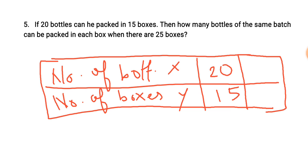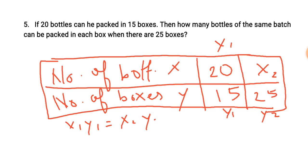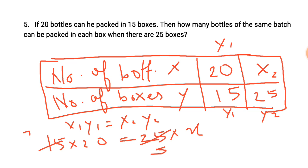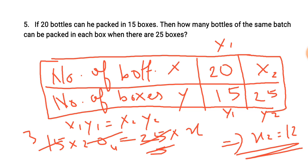Using the inverse proportion formula x1 times y1 is equal to x2 times y2: 15 into 20 is equal to 25 into x2. Solving: 15 times 20 divided by 25 — this gives x2 is equal to 12. So 12 bottles are packed in each box when there are 25 boxes. This is the final answer.